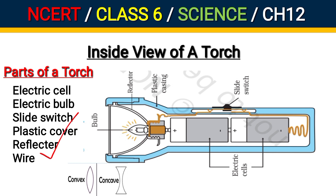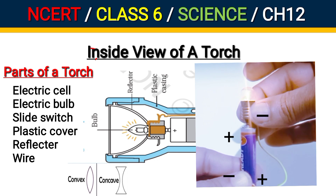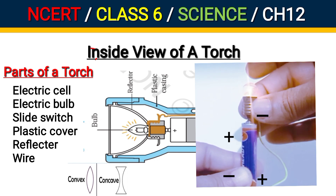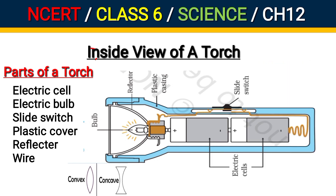Now let's understand how these parts work. If the cells in the torch are arranged so that both ends are negative-to-negative or positive-to-positive, in this condition the bulb will not glow. As we saw in the previous video, the bulb will glow when it is connected from positive terminal to negative terminal.